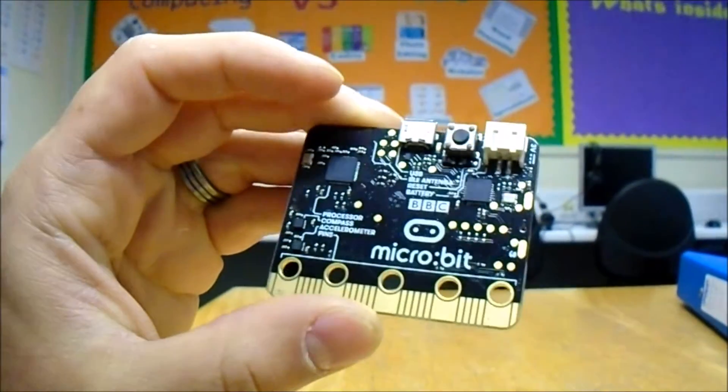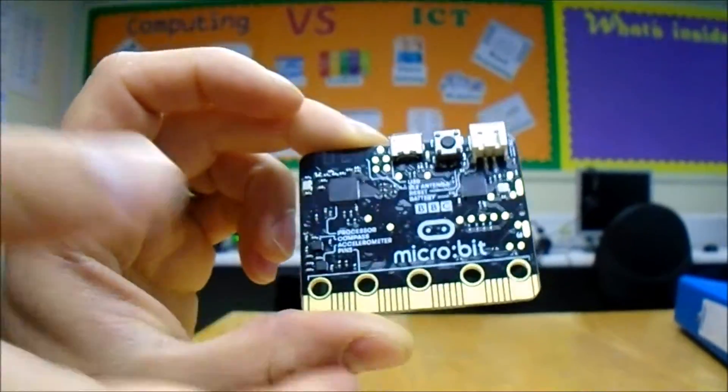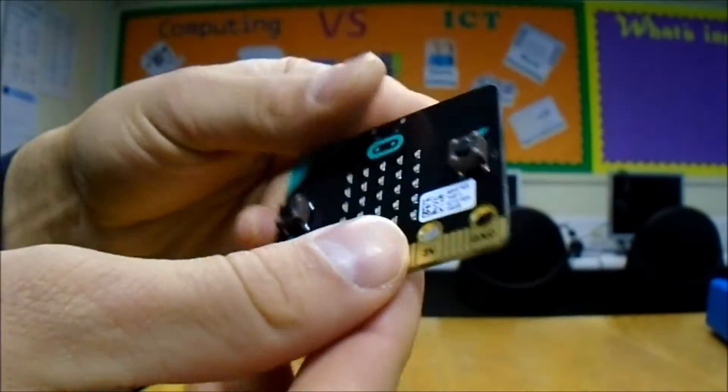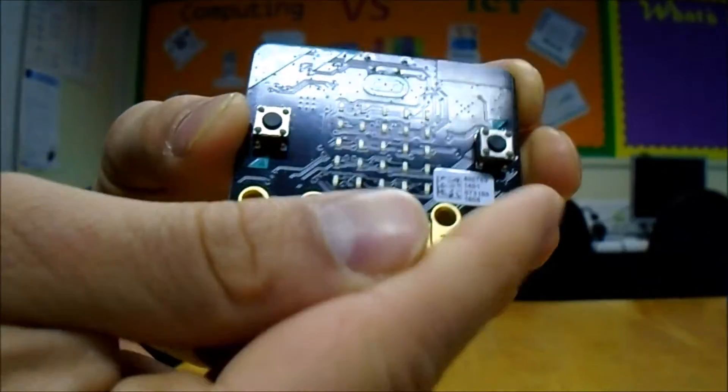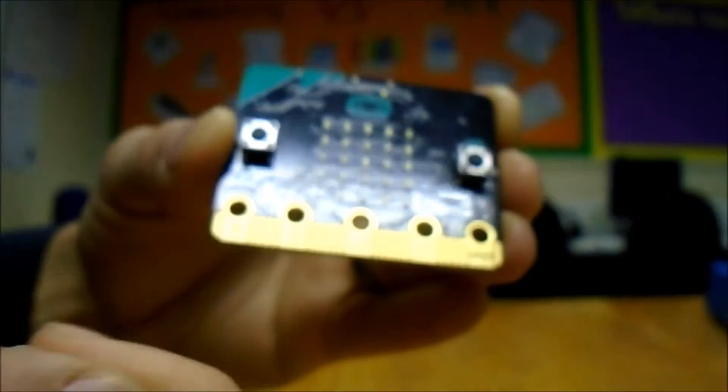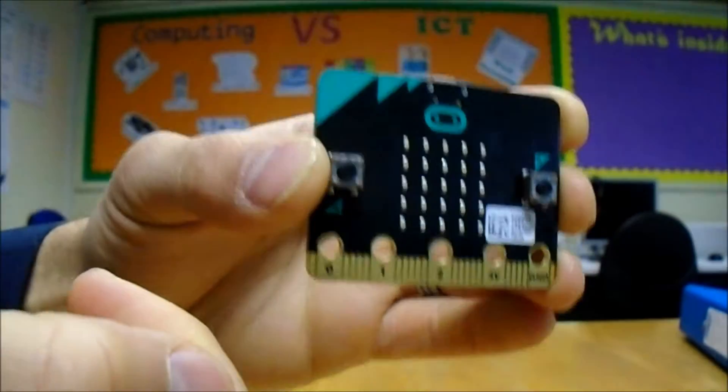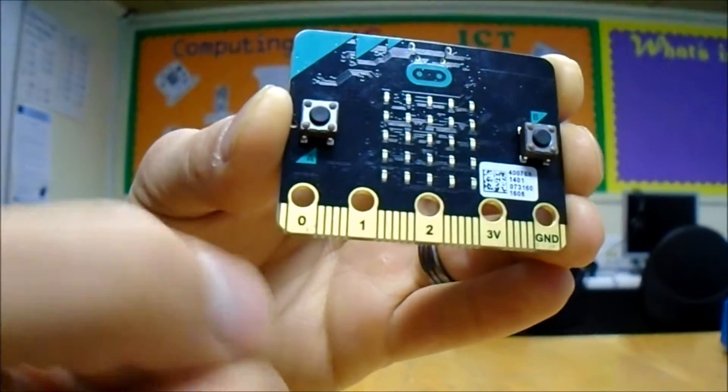In this video we're going to look at how to physically connect items to the micro:bit. We've got our micro:bit here. Now one of the areas that we haven't looked at are these holes at the bottom and these sections with numbers on them. Those are called pins and they allow you to connect electronic items to the micro:bit.